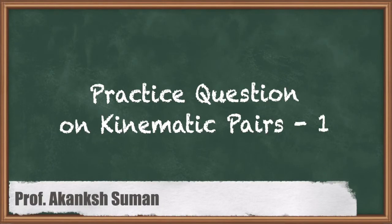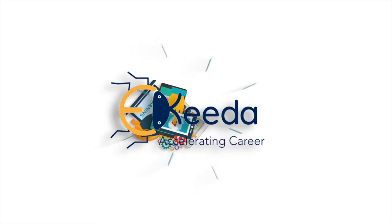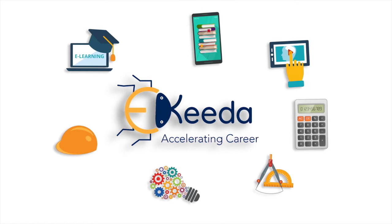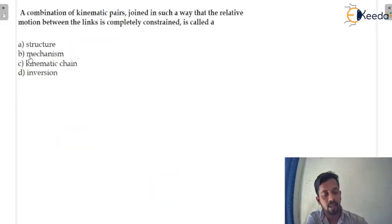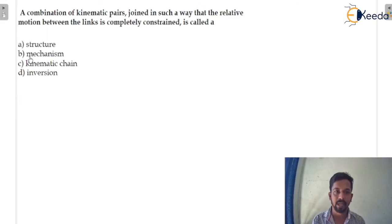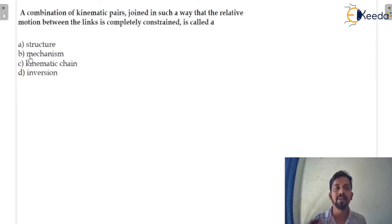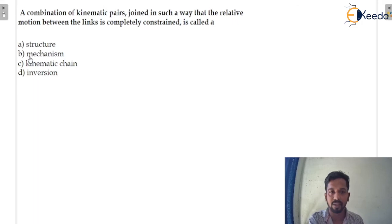Hello everyone, this is Akang Shuman here. We are going to solve questions based on kinematic pairs. In the question it is given that a combination of kinematic pairs joined in such a way that the relative motions between the links is completely constrained. Completely constrained means there is motion in a particular direction only.